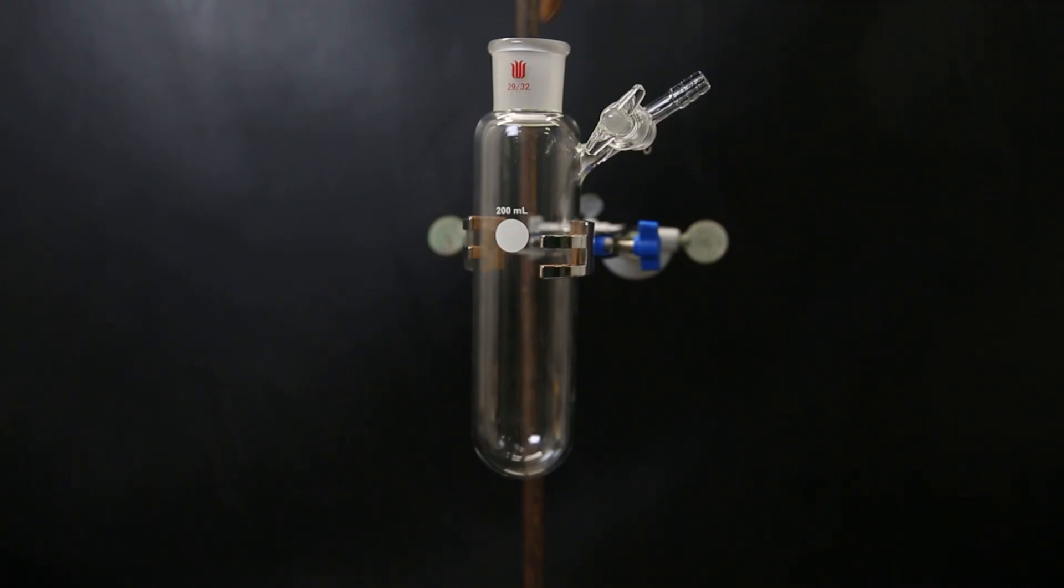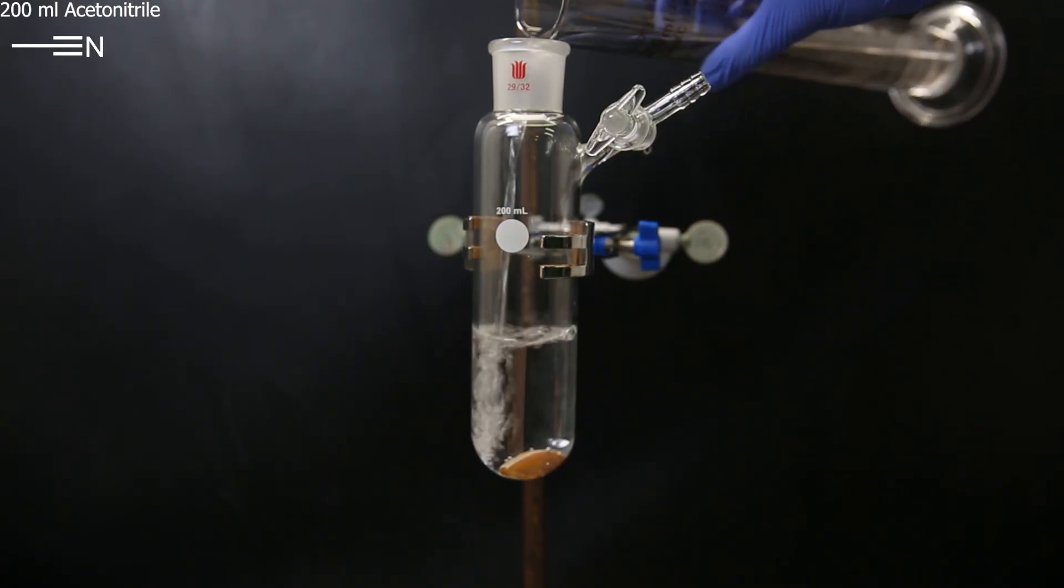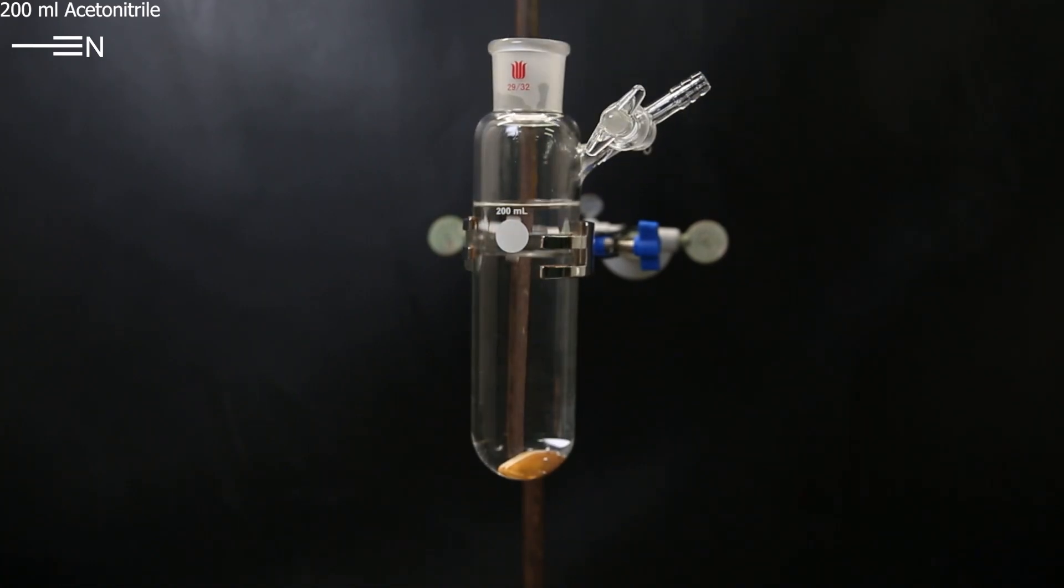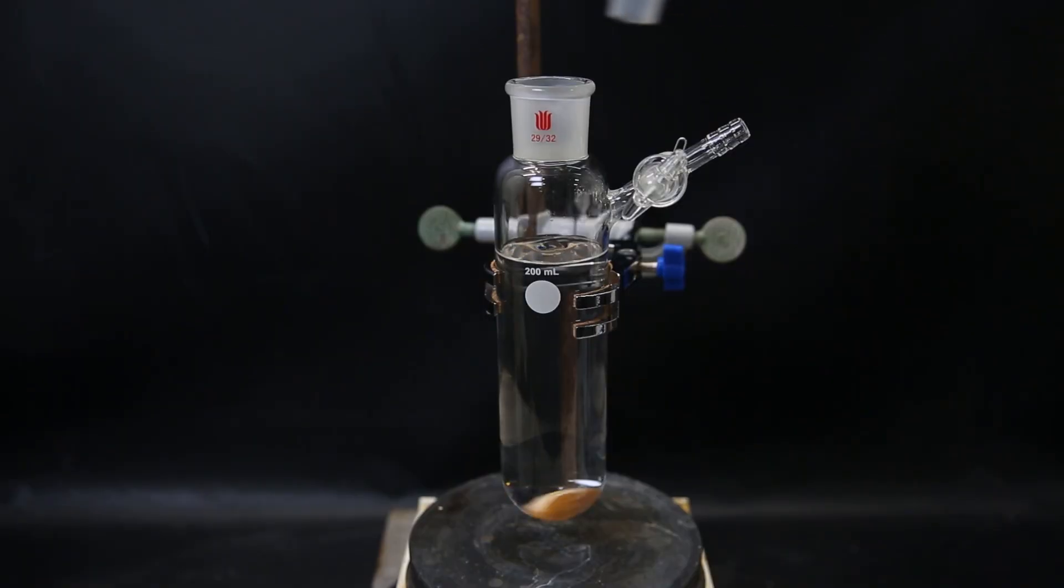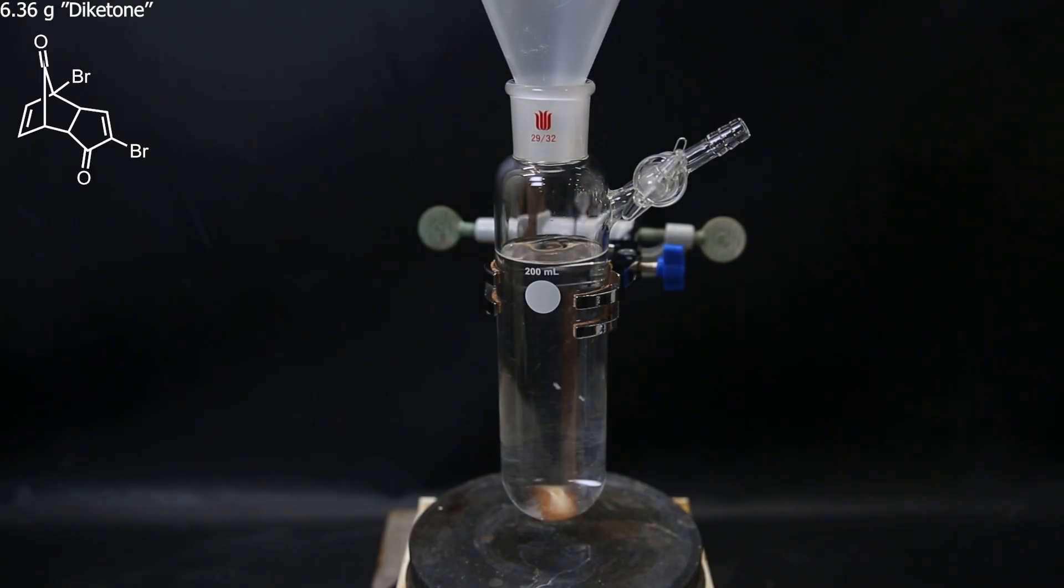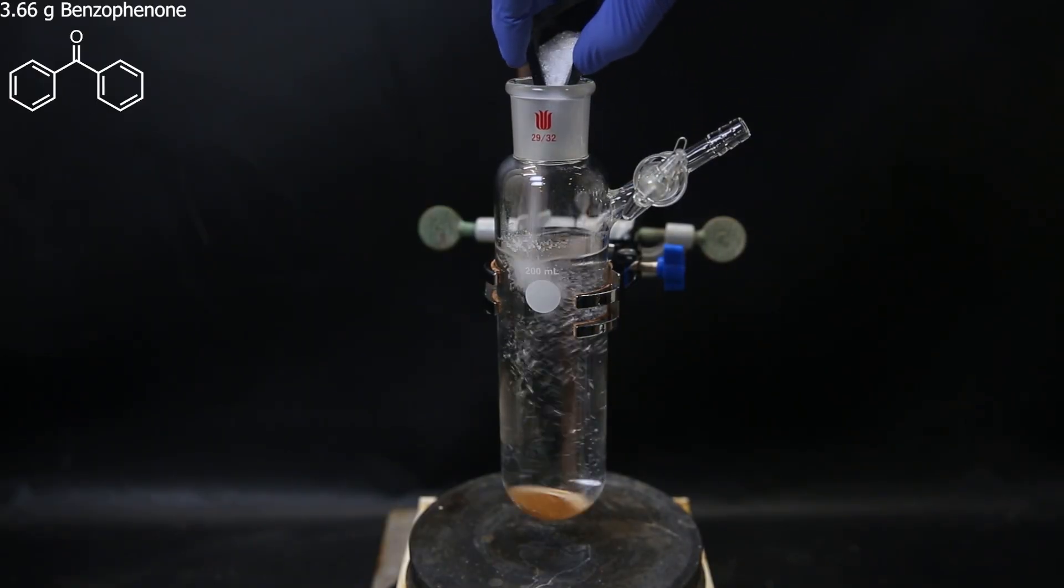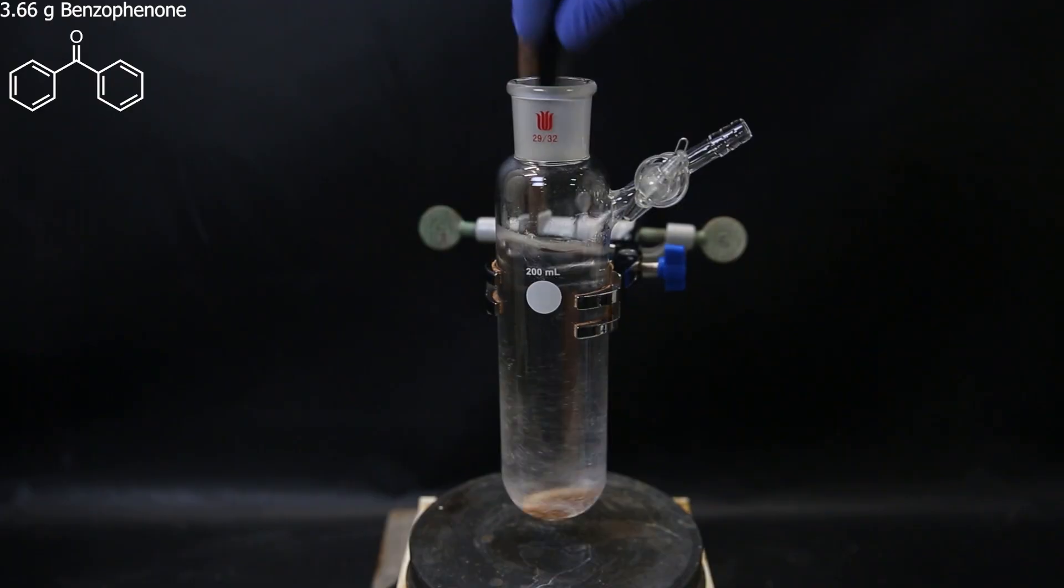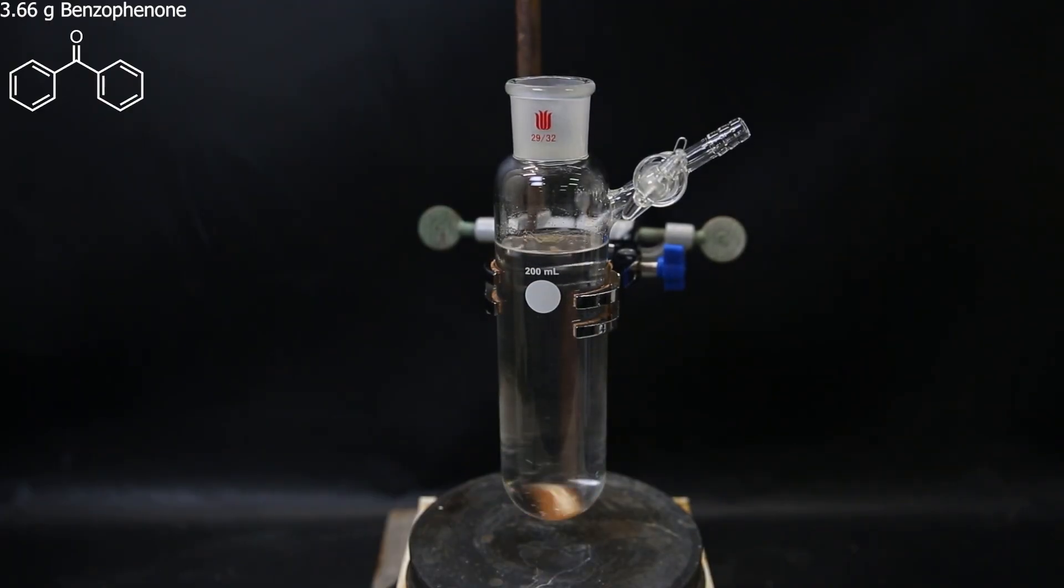So to get started, I set up a Schlenk flask and drop in a stir bar. I then add 200 ml of acetonitrile as the solvent and move it to a stir plate. I add in 6.36 grams of the diketone I made in the previous video and 3.66 grams of benzophenone as the photosensitizer. This time I am trying out one equivalent of benzophenone instead of 0.5.